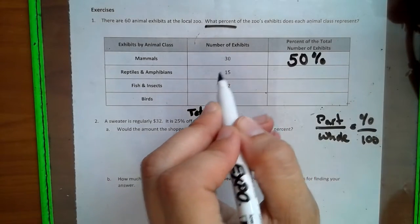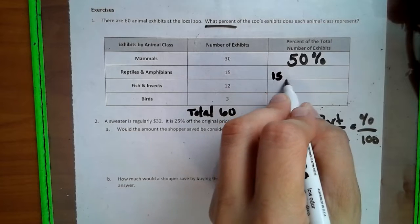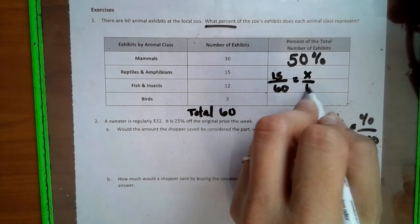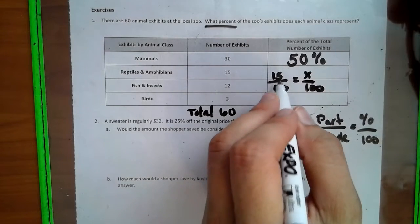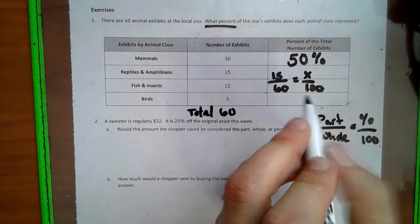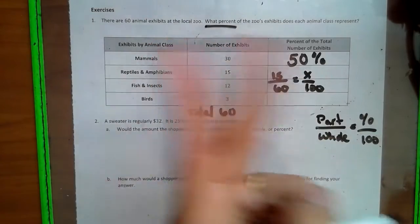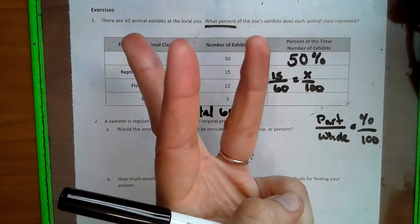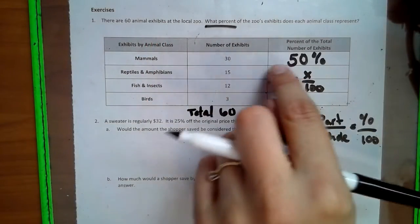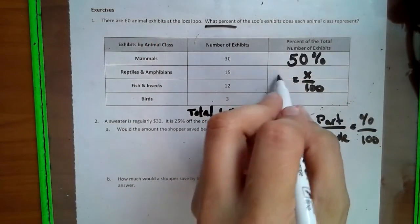So 50% is this one. So then we look at the reptiles and amphibians and we have part over the whole. So 15 over the 60 equals blank over the 100. So 15 60ths. That is a fourth. Like 15, 30, 45, 60. So four of those go into it. So I'm going to take this away and I'm going to put 1 fourth.